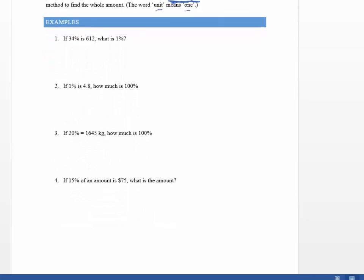If we have a look at my first example, what I've got here is 34% is 612. What is 1%? So I want you to think about setting out like this, where we say that 34% is equal to 612. Because that's what we're told, 34% is 612. And we're asked to find 1%. So I'm going to say 1% here.